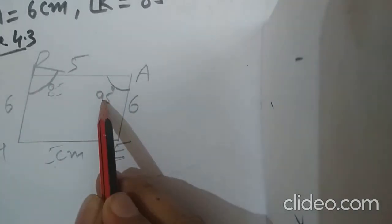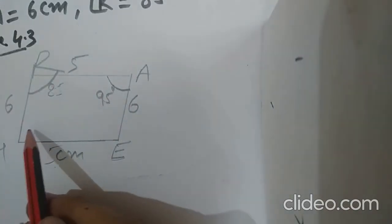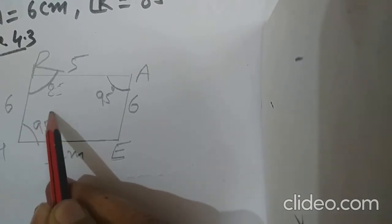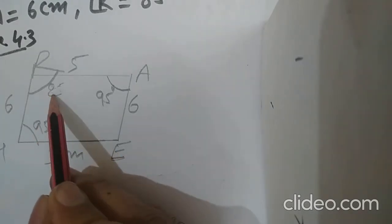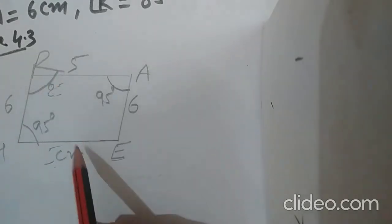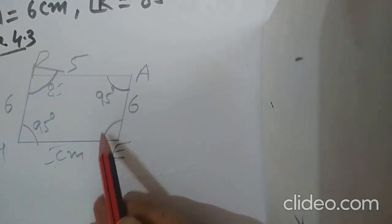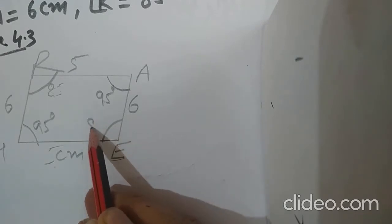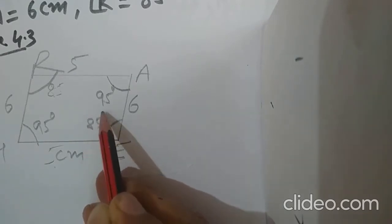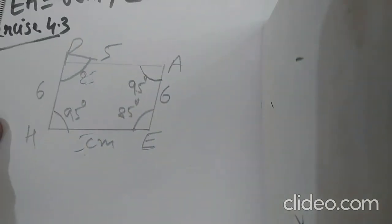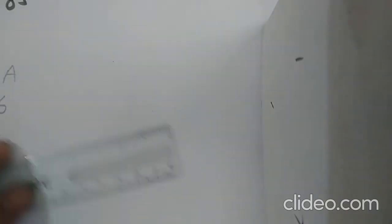So when angle A is 95°, angle H will also be 95°. And when angle R is 85°, angle E will also be 85°. That's the angle setup for this parallelogram, so now I need to draw the fair (final) copy.